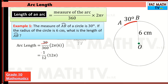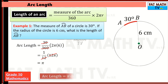You can simplify the fraction by dividing by 30: that gives 1 over 12. And 2 times 6 is 12, so 2π times 6 is 12π. Then you can cancel the 12 and 12, leaving π. So the length of the arc is π centimeters, or approximately 3.14 centimeters.